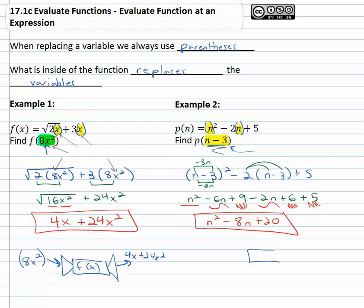Similarly with the other function machine from example 2, this one's p of n. We took what was inside the function, the n minus 3 that's inside the function. So we put the n minus 3 as a group into the function and what came out was n squared minus 8n plus 20.